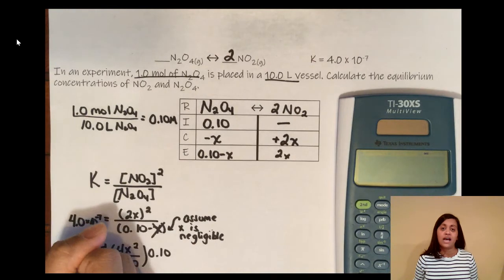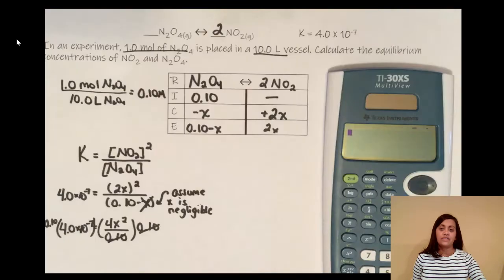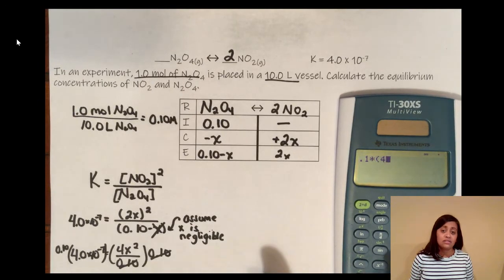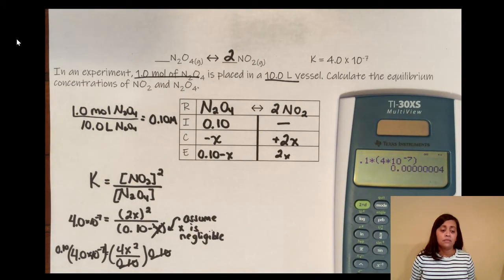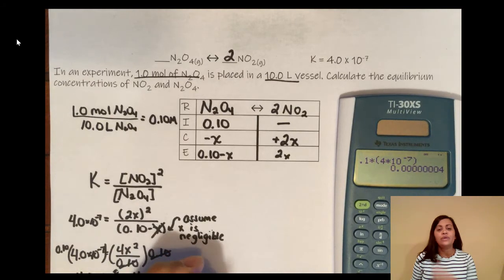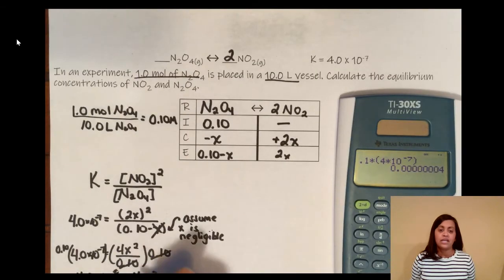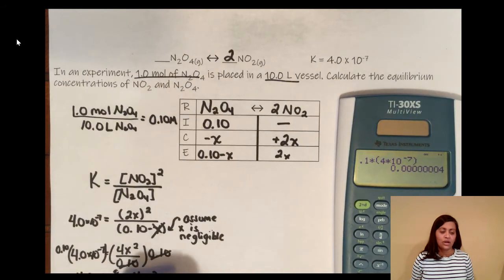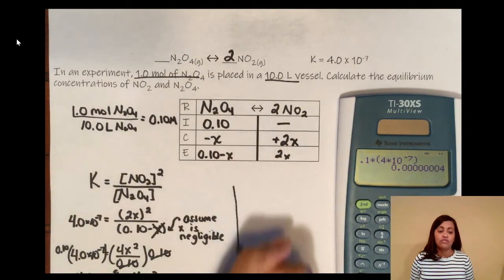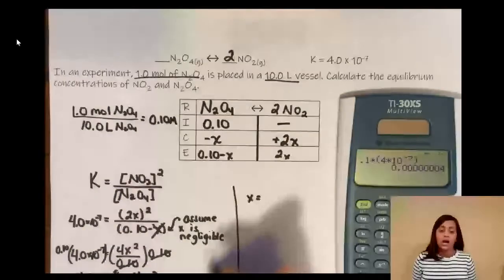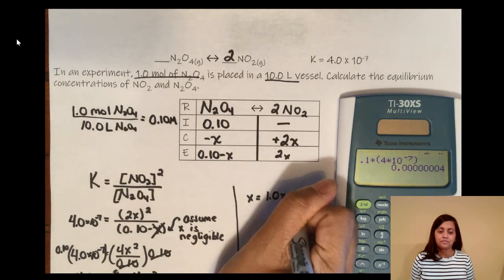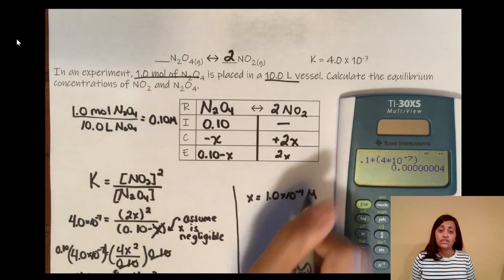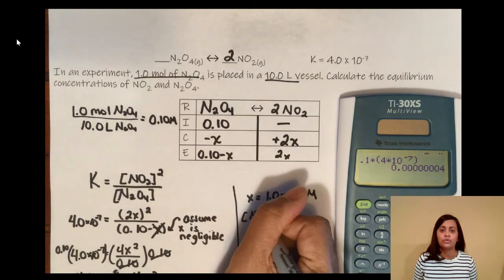So we multiply both sides by 0.10, which gives 4.0 × 10⁻⁸ = 4x². Divide both sides by 4 to get 1.0 × 10⁻⁸, then take the square root of both sides. X equals 1.0 × 10⁻⁴. That's our X, which we'll plug into the equilibrium row for both substances.